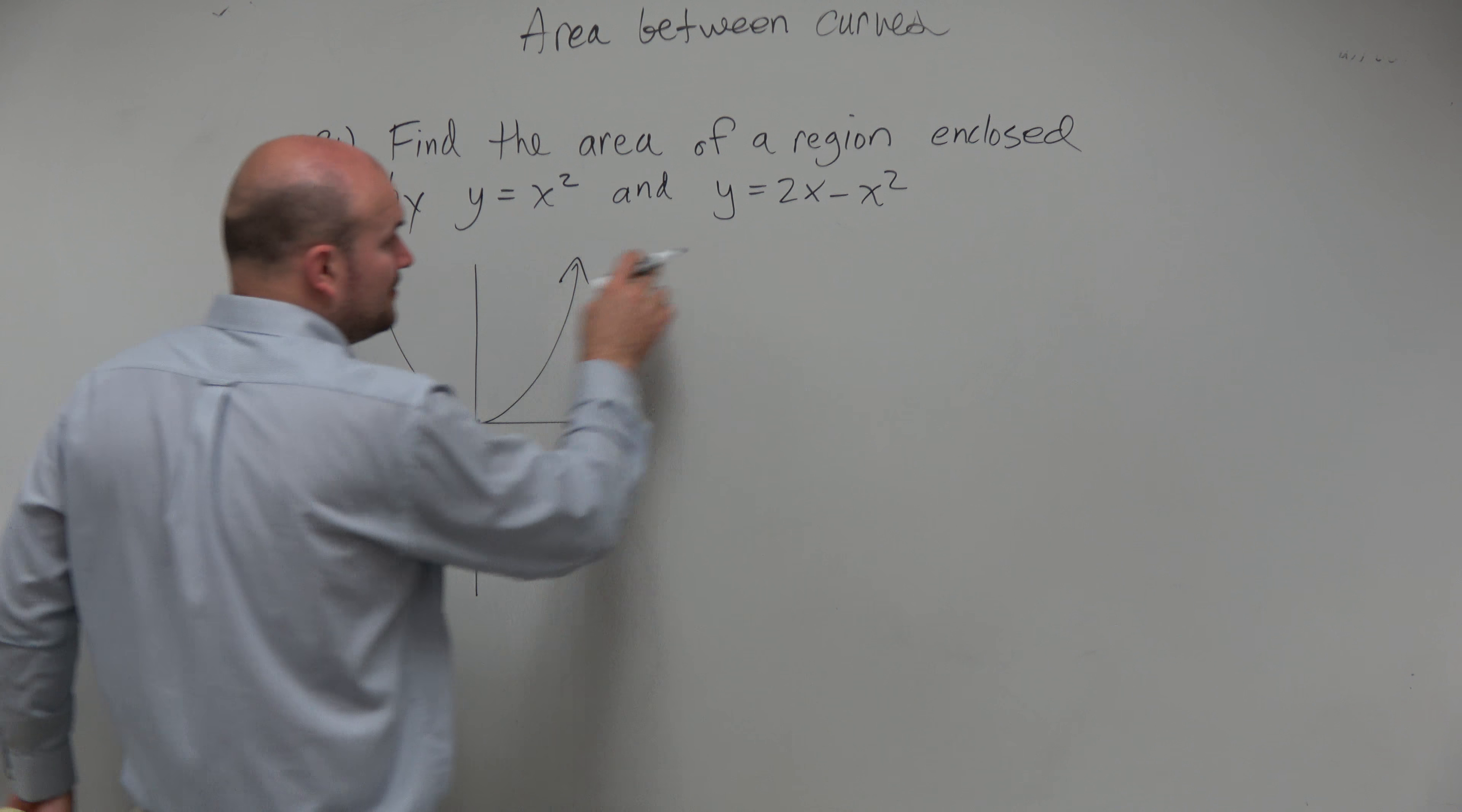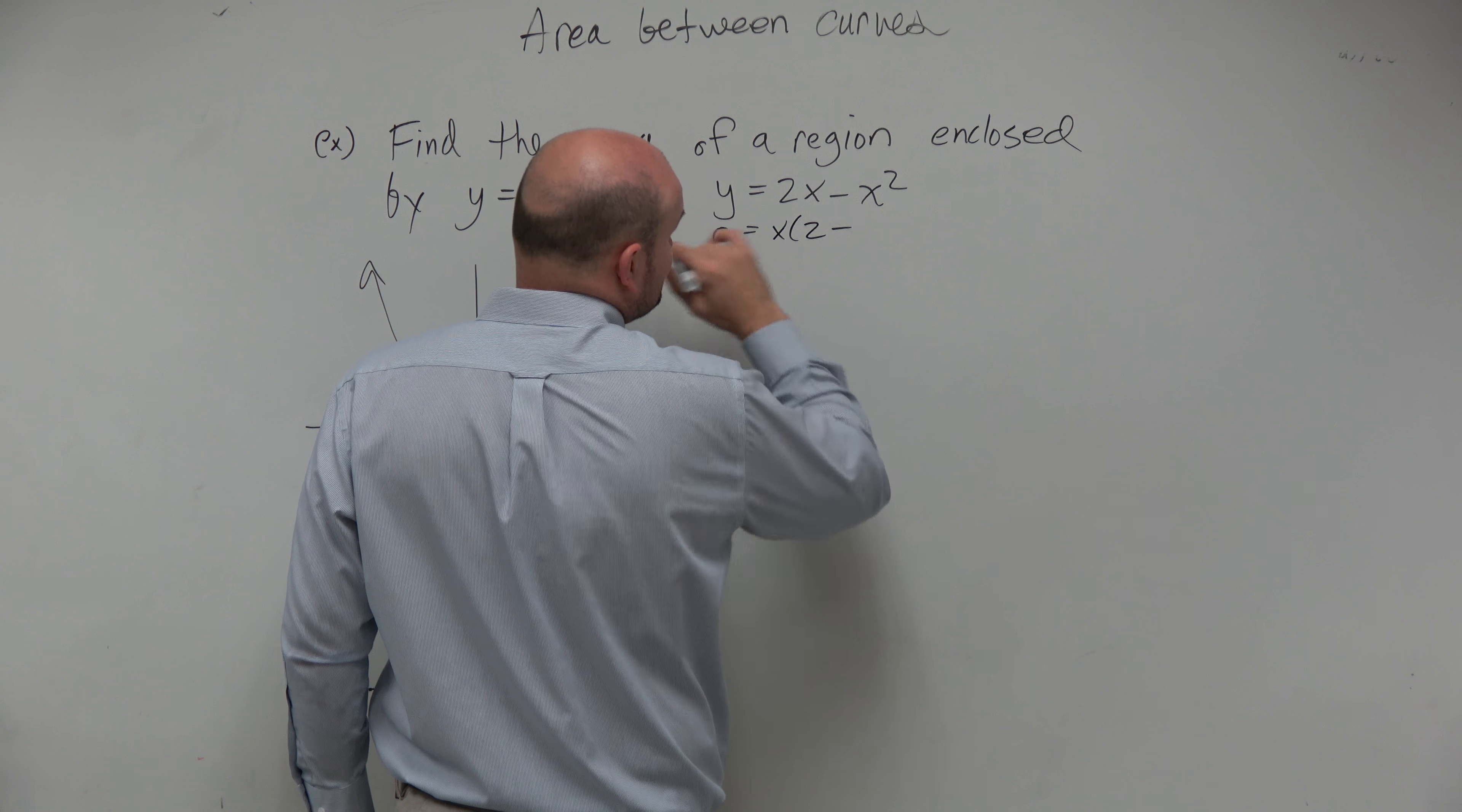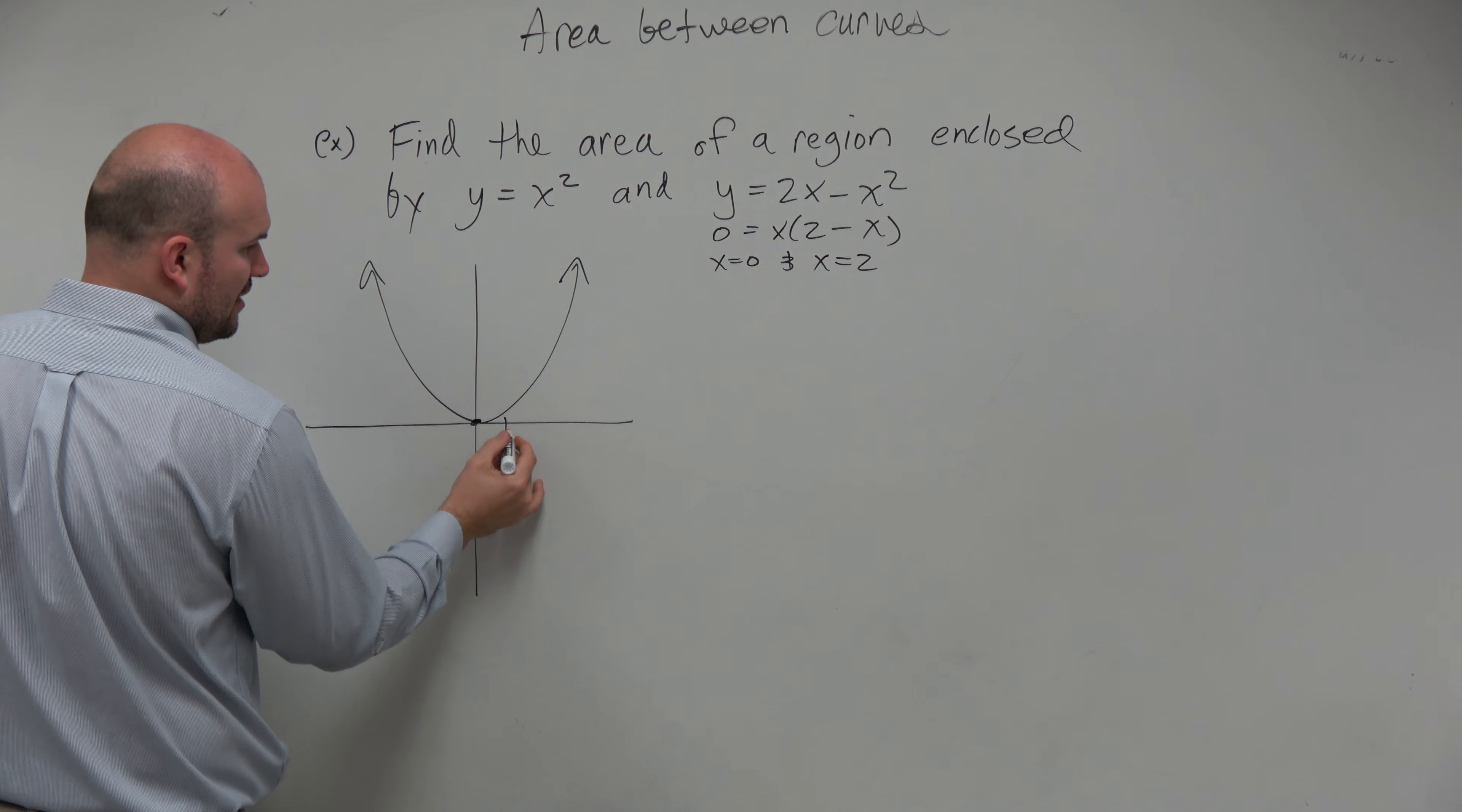Now this one, we know if anything else, we could find the x-intercepts here. So we could set this equal to 0. And then we could factor out an x, right? Therefore, we could say x equals 0 and x equals 2. So we have another 0, and then at 1, 2.